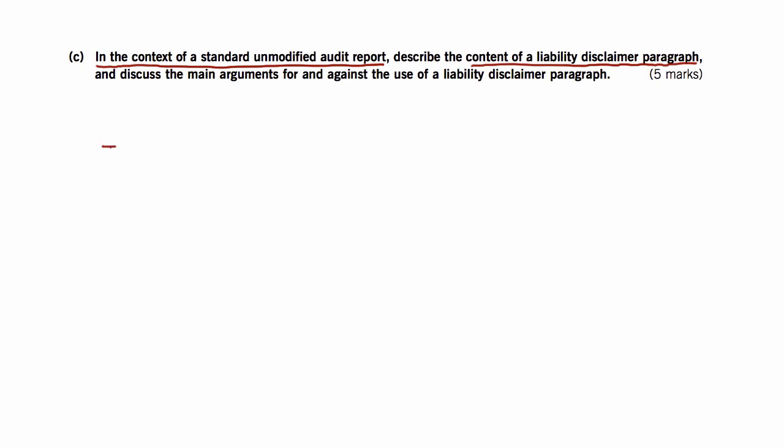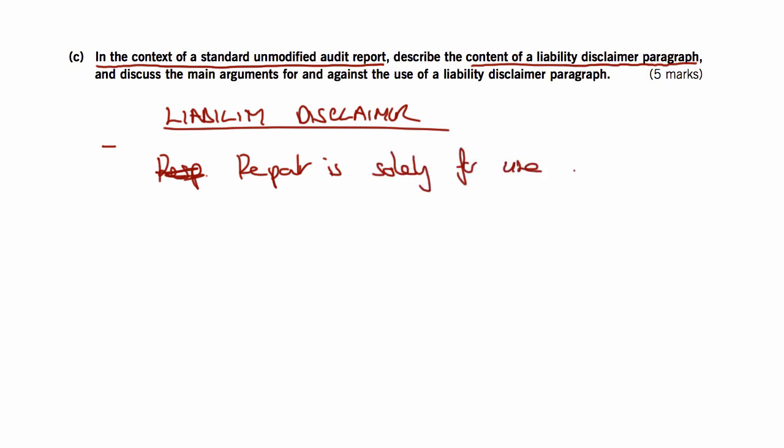So basically a liability disclaimer paragraph, used more and more nowadays by the way, just basically says that the report is solely for the use of the members of the company that we're auditing, their members. And remember it's as a body, not as individuals. It's only for the use of those and therefore no responsibility to others. That's basically what it's trying to do.